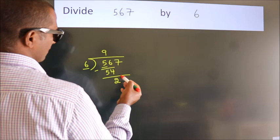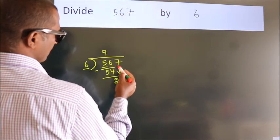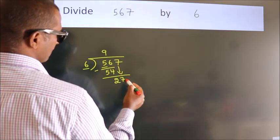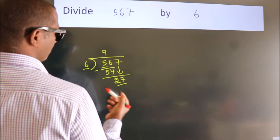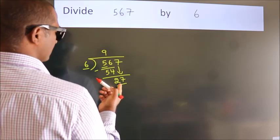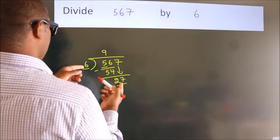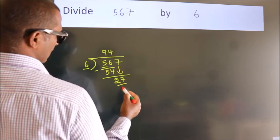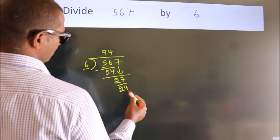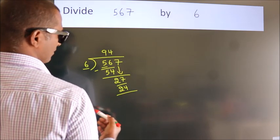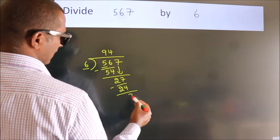After this, bring down the beside number, 7. So, 27. A number close to 27 in the 6 table is 6 fours, 24. Now we subtract. We get 3.